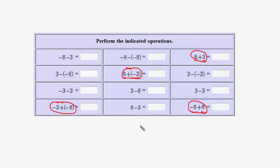Whether you're adding a positive or adding a negative makes a difference. Notice here we are adding a positive 3, so I will circle that in black. Here we're adding a positive 8, so I will circle that in black as well. And in the other two cases, we are adding negatives.